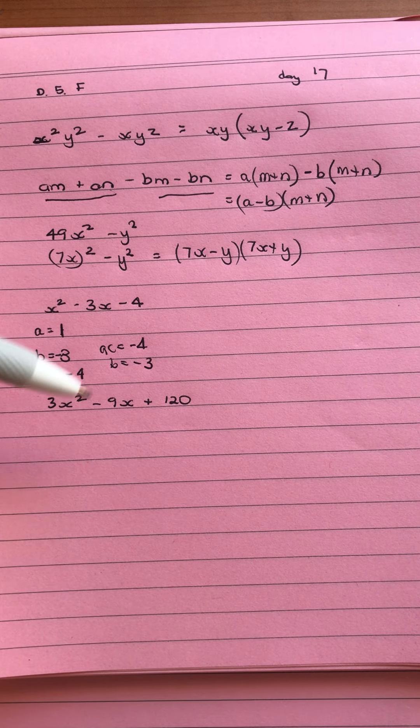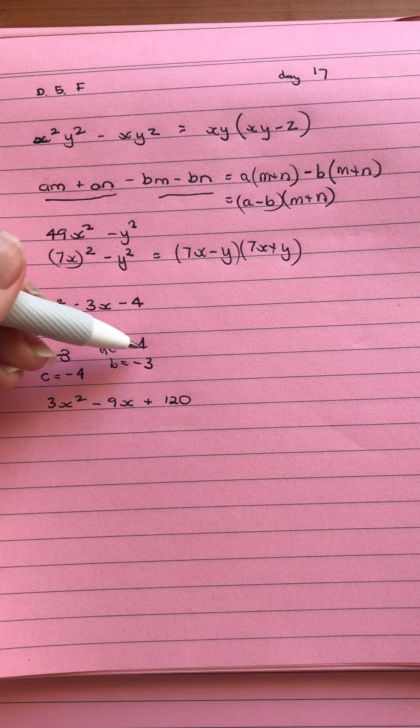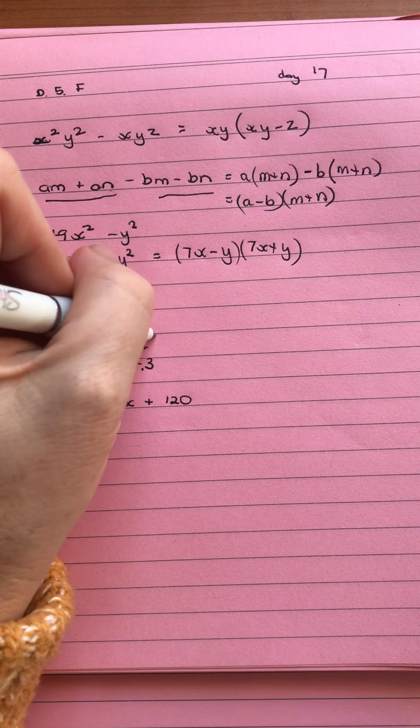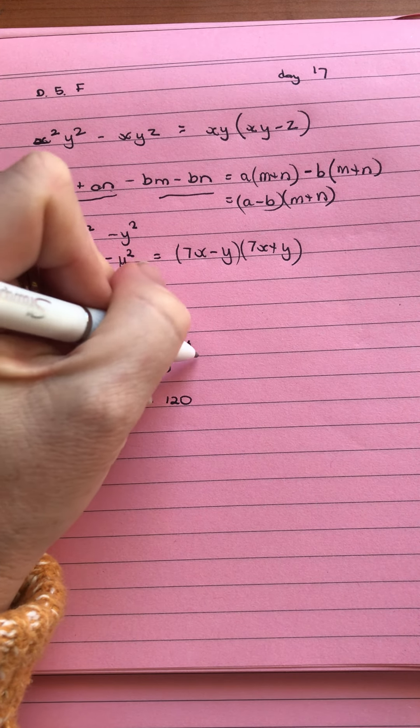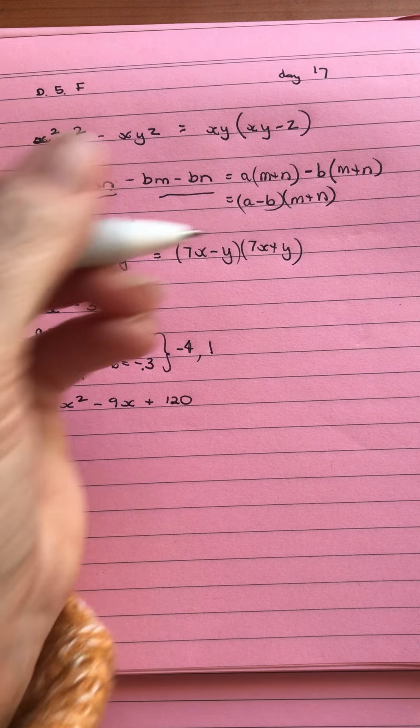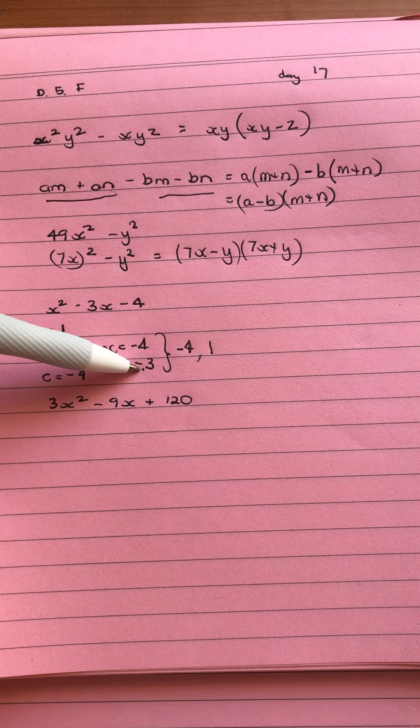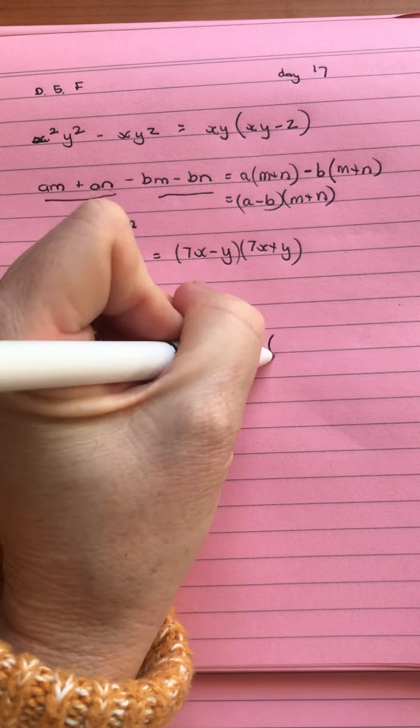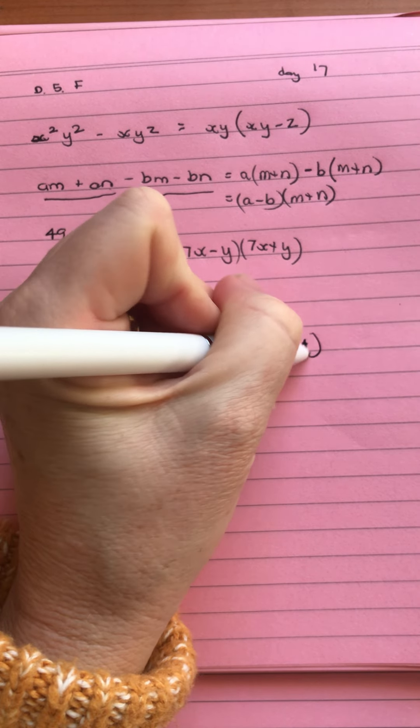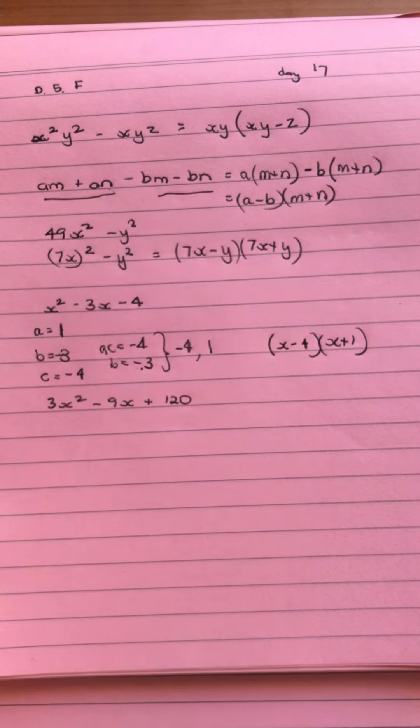We're looking for two numbers that will multiply to give negative 4, but add to give negative 3. So if we use negative 4 and positive 1, they will multiply to give negative 4, and negative 4 plus 1 will give us negative 3. So we're able to put that straight in the brackets. x take away 4, x plus 1 there.